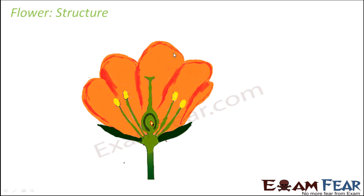Here I have shown the basic structure of any flower. Now let me quickly tell you the different parts. These colored structures which you see in a flower are generally colored — in some flowers it is yellow, in some it is red. For example, hibiscus is red in color, and roses can be red, yellow, or even white. These are known as petals.